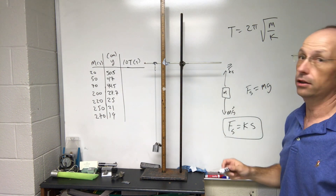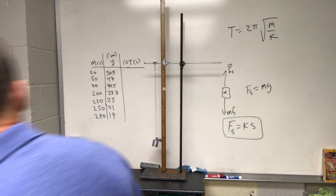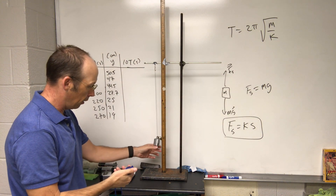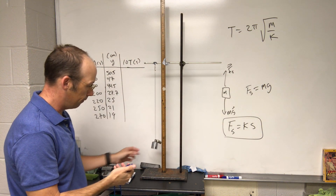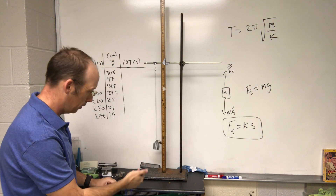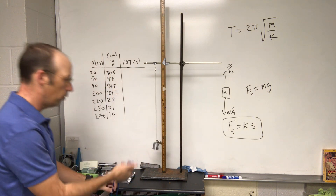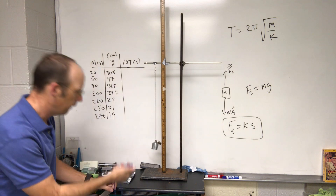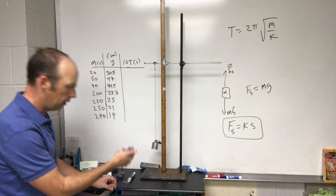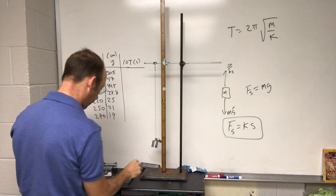In order to get this data I'm actually going to measure 10 oscillations and then divide by 10. I already have some data here. Let's go — start it — one, two, three, four, five, six, seven, eight, nine, ten — 11.53 seconds for 10 oscillations.